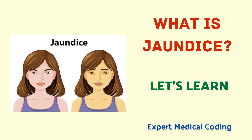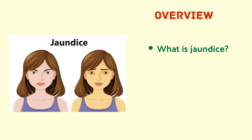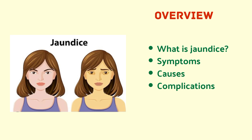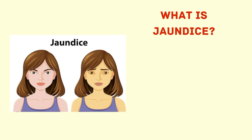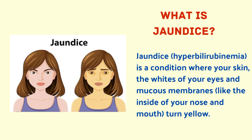Hello friends, welcome to Expert Medical Coding. In today's video we're going to learn about jaundice — we're going to see what jaundice is, what are the symptoms, causes, complications, tests, treatment, and precautions. Jaundice, also known as hyperbilirubinemia, is a condition where your skin, the whites of your eyes, and mucous membranes like the inside of your nose and mouth turn yellow.